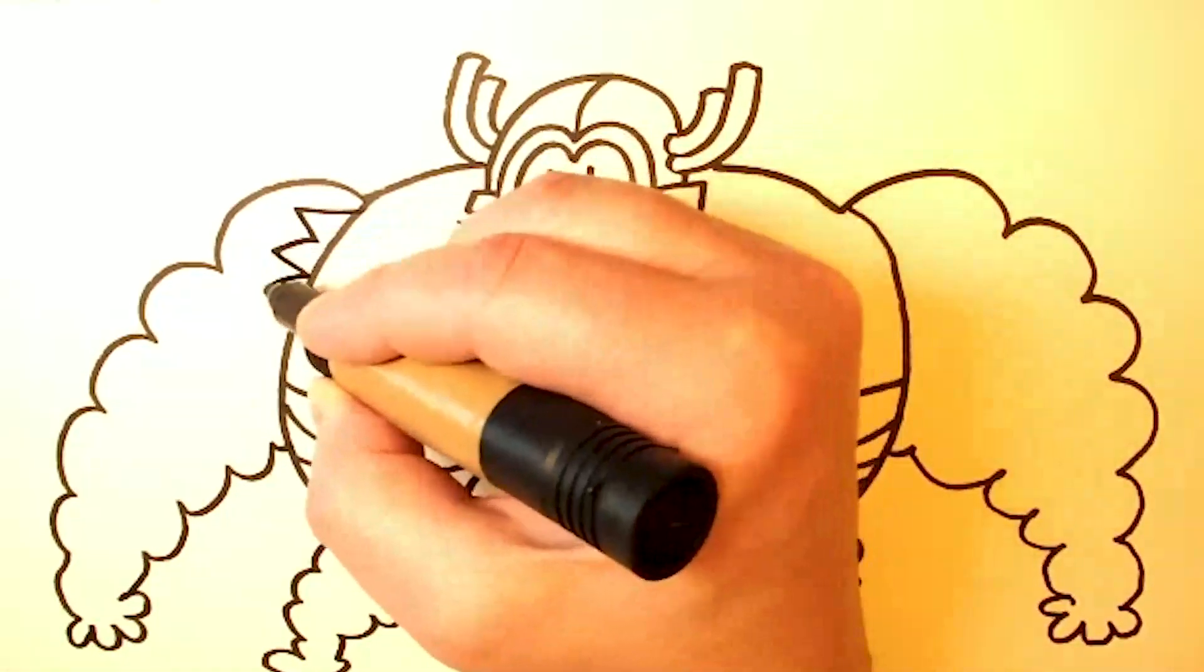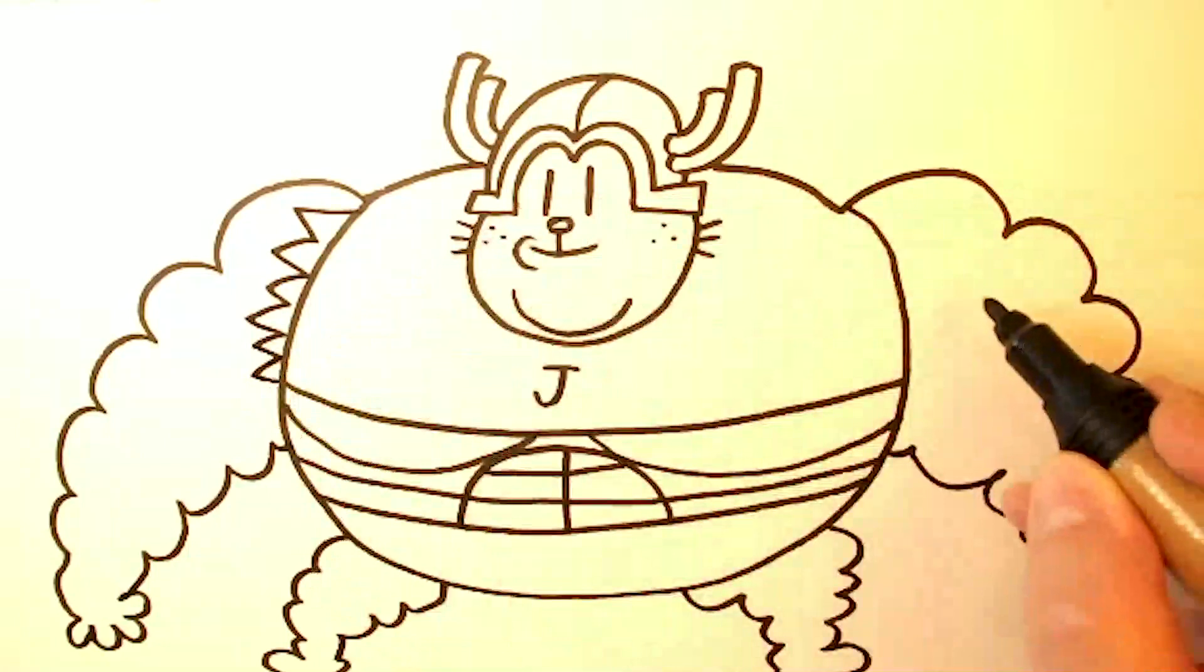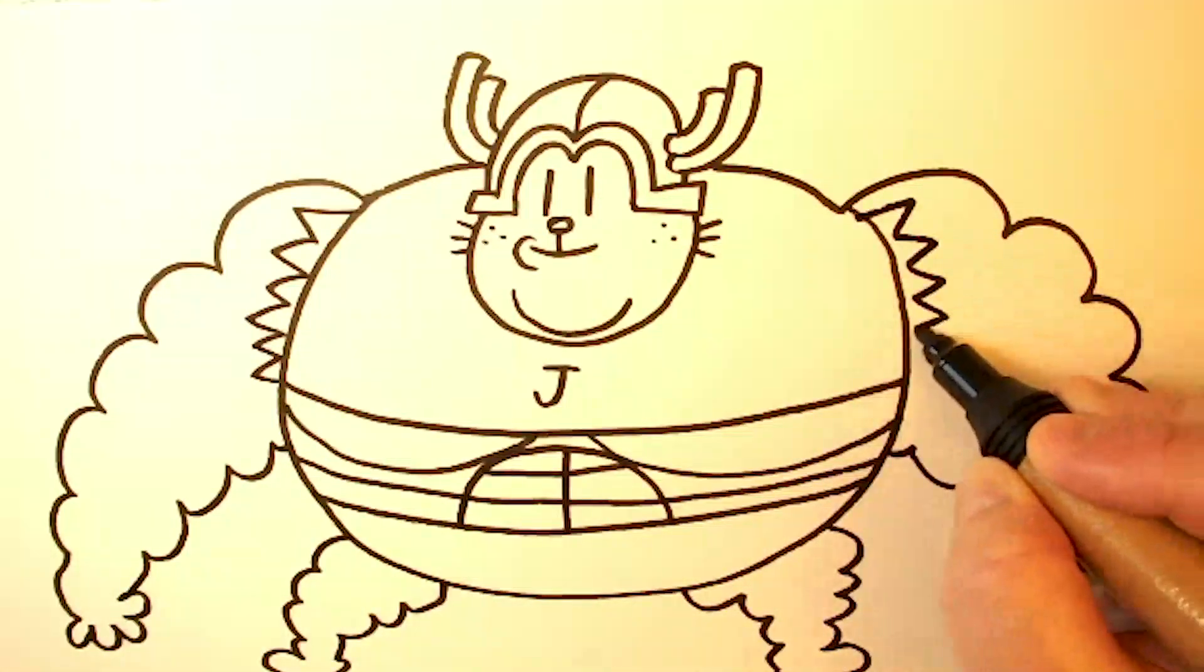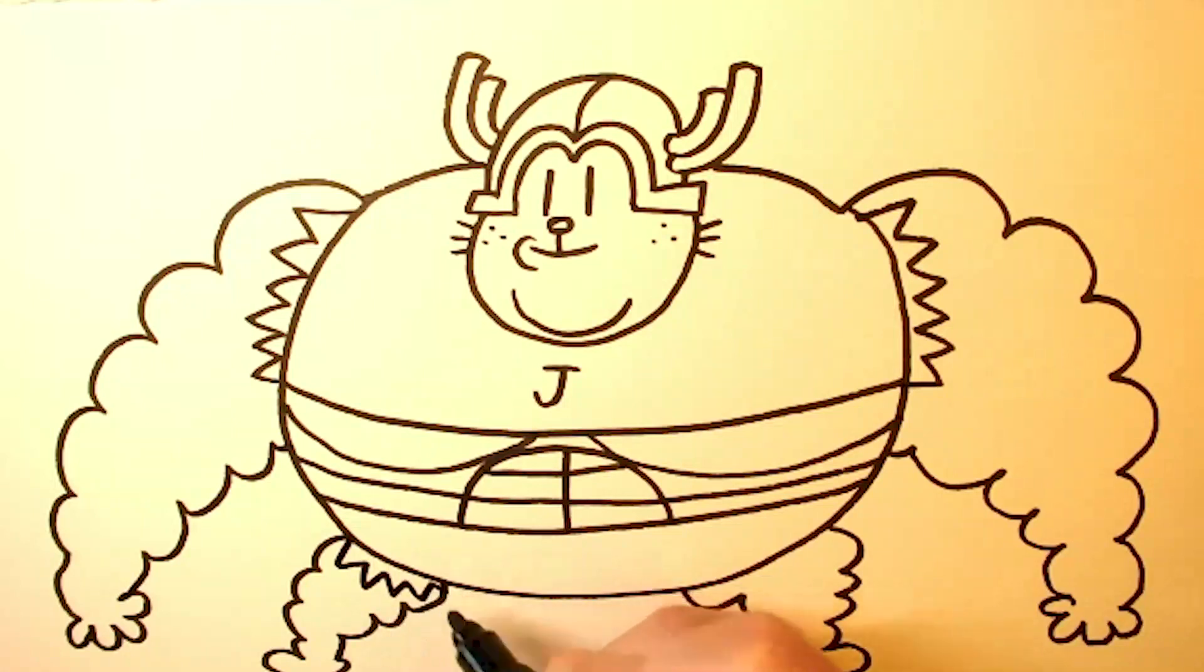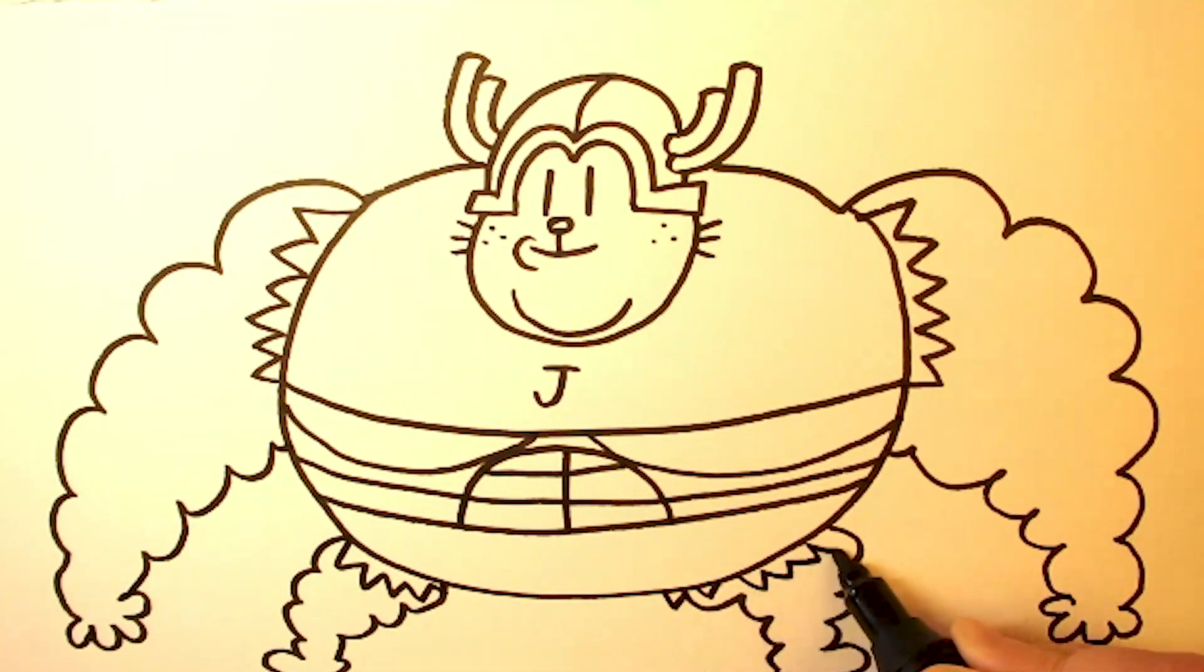And then, right by his arms and his legs, we're going to draw some little V-shapes to make it look like his shirt and his pants have torn. Because he's grown so large that his shirt and his pants kind of got ripped.